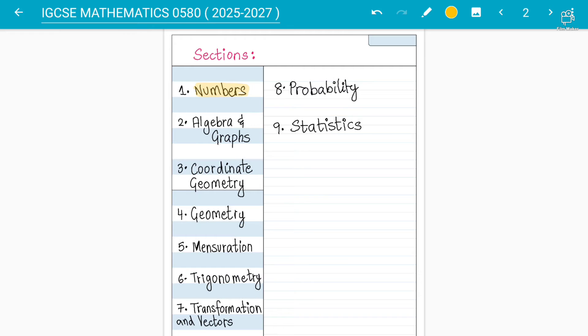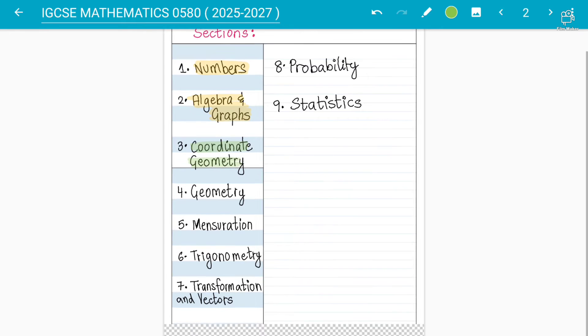Then we do algebra and graphs in which it's about the quadratic formulas, functions and different types of graphs, sequences comes in there, a lot of other topics like direct inverse proportion, etc. Then we move on, we have coordinate geometry, midpoints, perpendicular bisectors, equation of perpendicular lines, parallel lines. Geometry is all about angles, circle theorems and parallel lines.